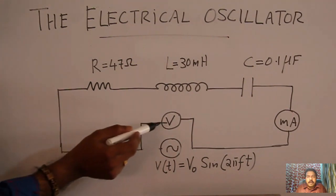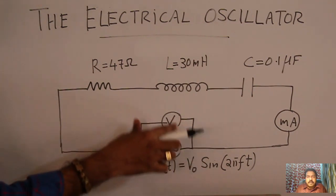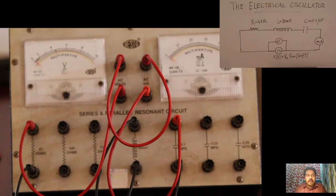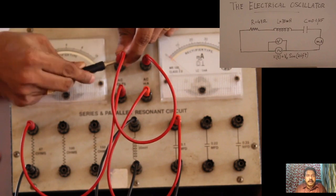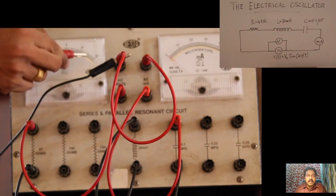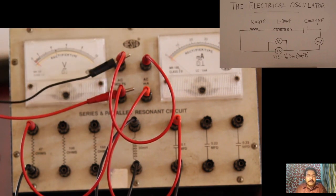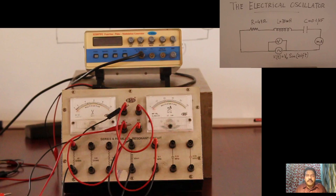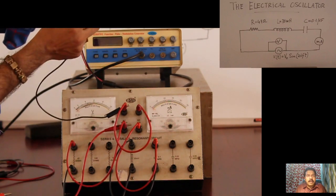Now we connect the periodic voltage source — the signal generator — in parallel with the voltmeter. Two wires are taken from the voltmeter terminals, and the positive and negative output wires from the signal generator are connected to these two wires, placing the signal generator in parallel with the voltmeter.